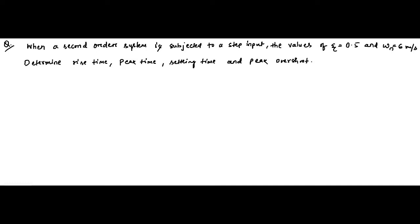Before watching this video, please watch all the videos related to time domain analysis by clicking on the control systems playlist — you will find all the videos there. Here is the first question: a second order system is subjected to a step input, with damping ratio zeta equal to 0.5 and undamped natural frequency omega_n equal to 6 radians per second. We have been asked to find the rise time, peak time, settling time, and peak overshoot.